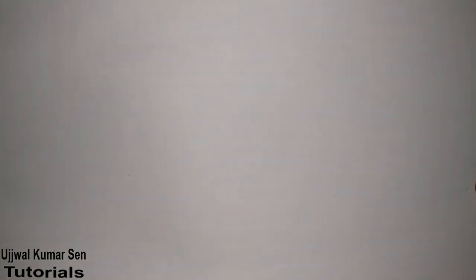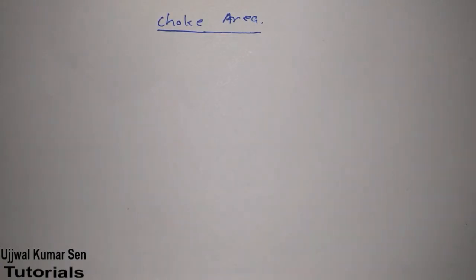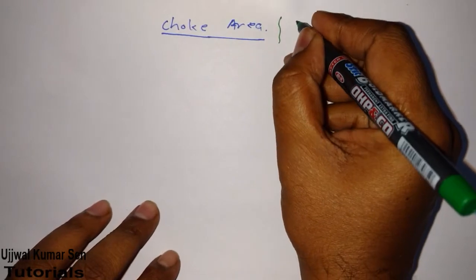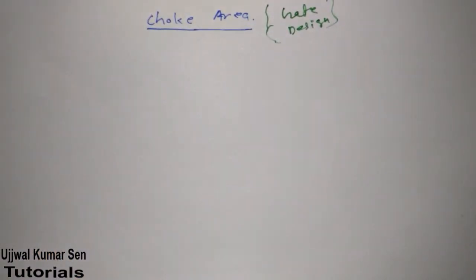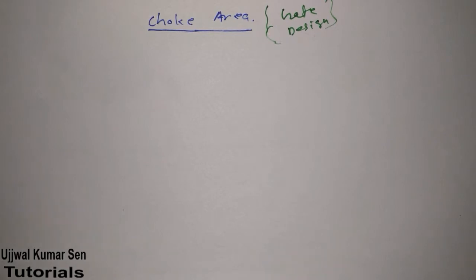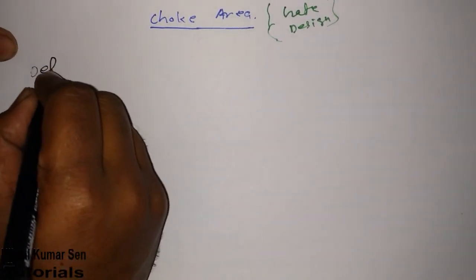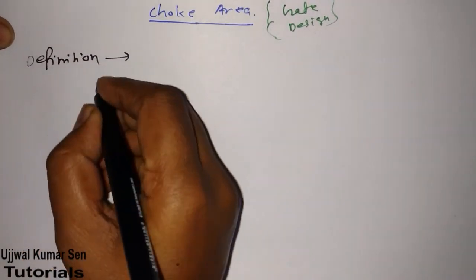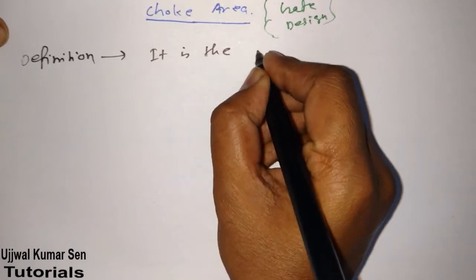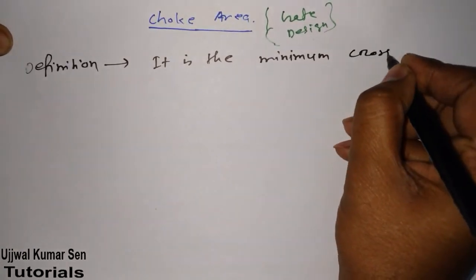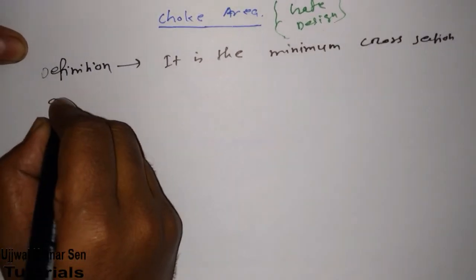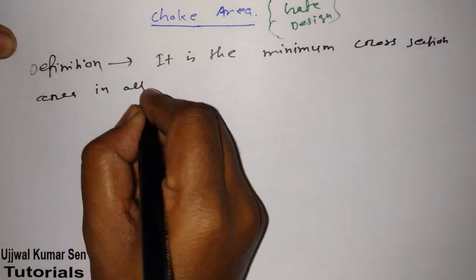Hello, this is Joel Kumarsen and in this video tutorial we are going to learn about choke area. Choke area is one of the areas we generally consider for gate design in metal casting. The definition of choke area is: it is the minimum cross-section area in all the gating elements.